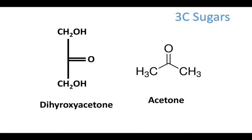So first we have dihydroxyacetone. This is a keto sugar, and you can tell that by the CH2OH at the carbon 1 position versus a CHO group which we'll see in aldose sugars. You also have a double bond to an oxygen at the carbon 2 position — that will always be true if it's a ketose. I put it next to acetone so you can see the relationship and understand why it's called dihydroxyacetone. You're basically just replacing the methyl groups on acetone with CH2OH groups.